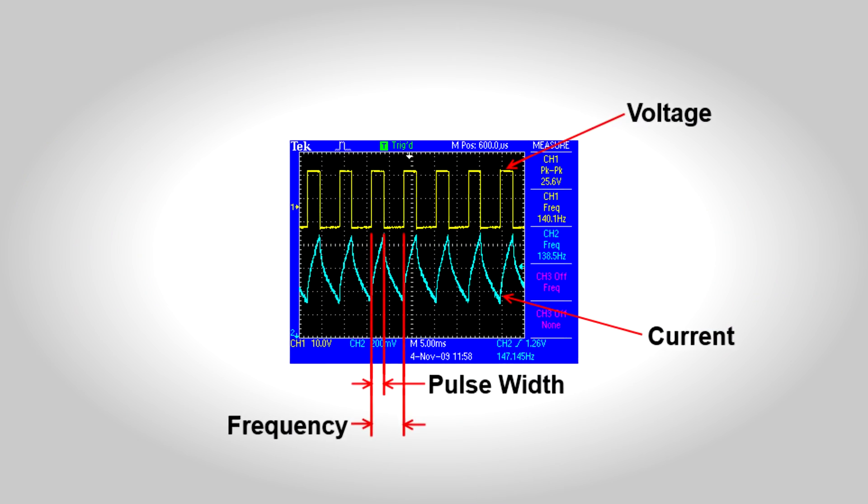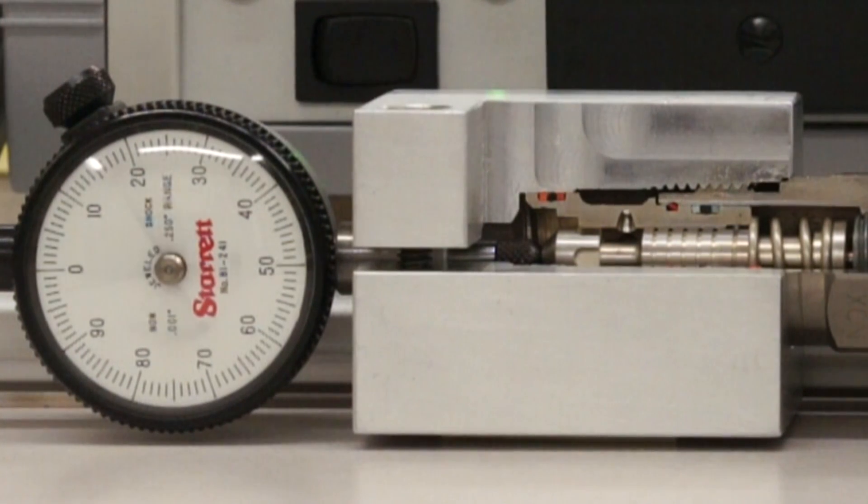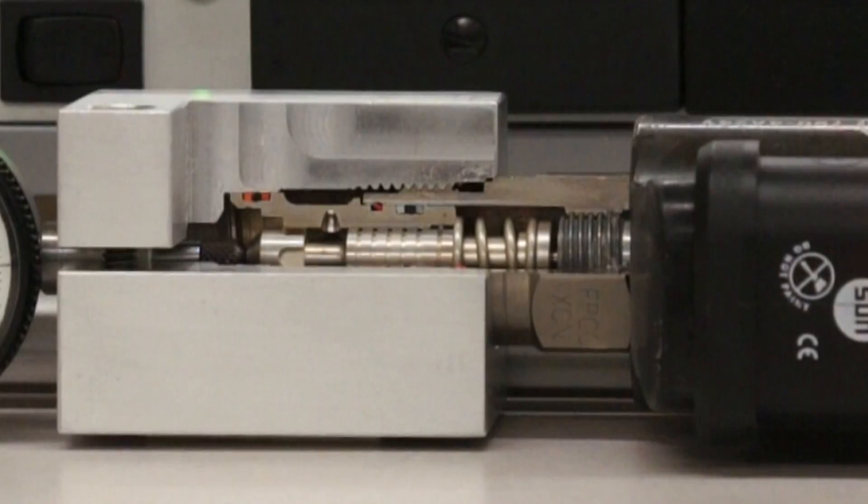What this does in effect is cause the valve to oscillate. This oscillation is used to stop friction from building up inside the valve. By keeping the spool inside the valve moving, you will reduce the friction between the spool and sleeve.